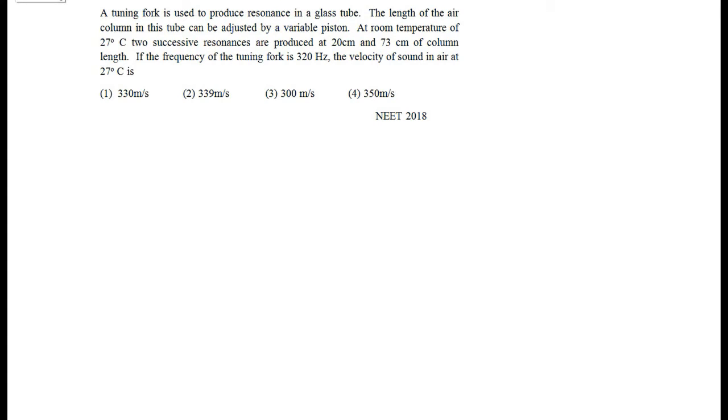A tuning fork is used to produce resonance in a glass tube. The length of the air column in this tube can be adjusted by a variable piston.